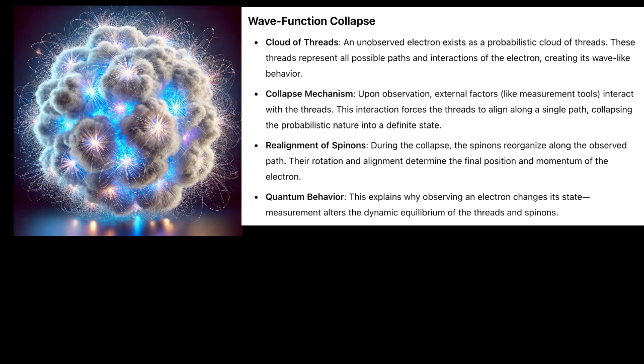Collapse Mechanism: Upon observation, external factors like measurement tools interact with the threads. This interaction forces the threads to align along a single path, collapsing the probabilistic nature into a definite state.